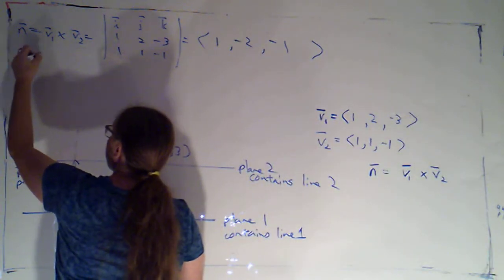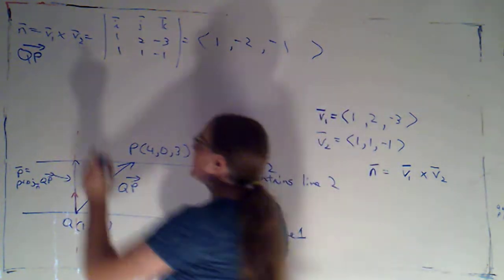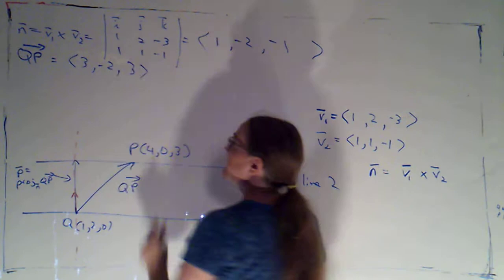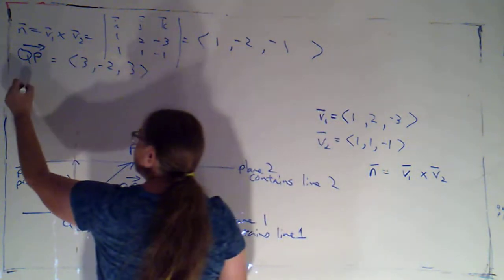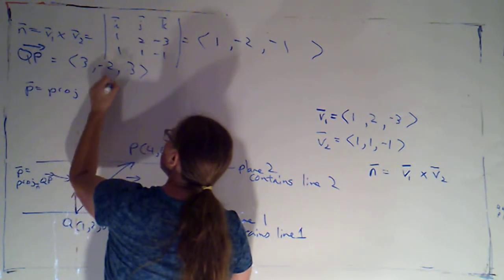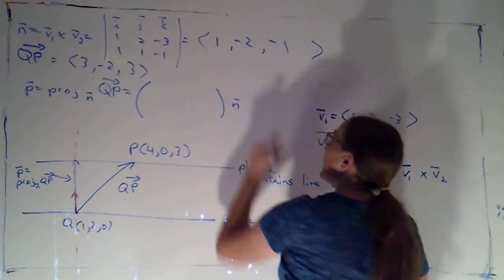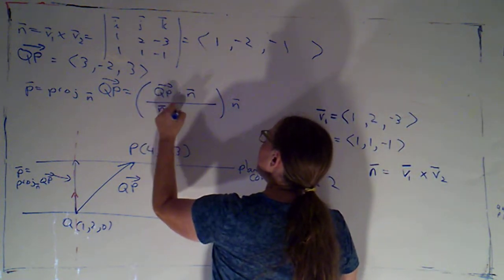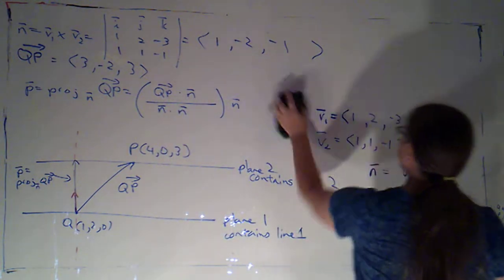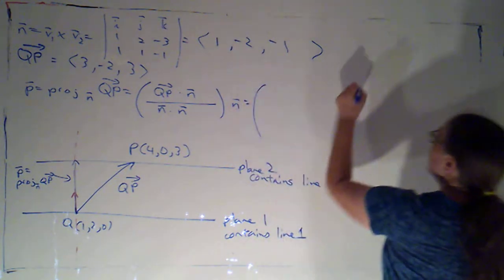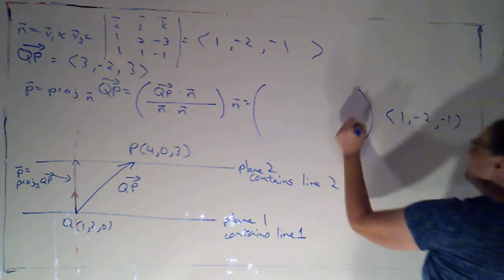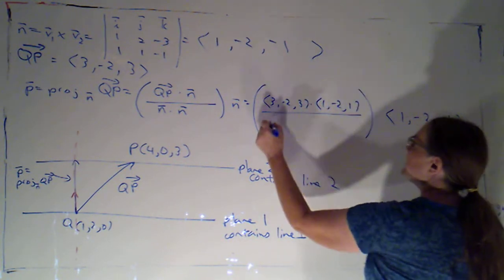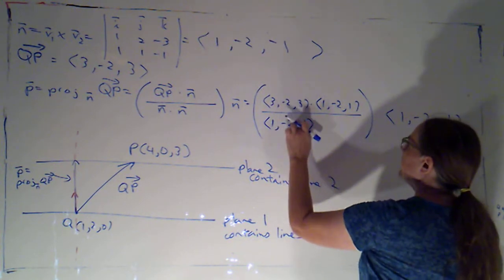Now let's calculate QP. That's P - Q: (4-1, 0-2, 3-0) = (3, -2, 3). Now I can calculate my projection. The projection of QP onto n gives a multiple of n, where the scalar is (QP · n) / (n · n). On top: (3)(1) + (-2)(-2) + (3)(-1) ... dotted with (1, -2, -1). On bottom: (1, -2, -1) dotted with itself.